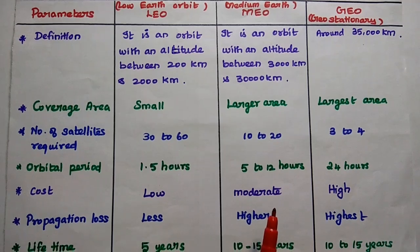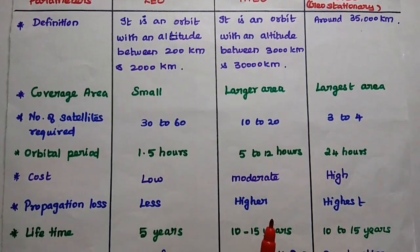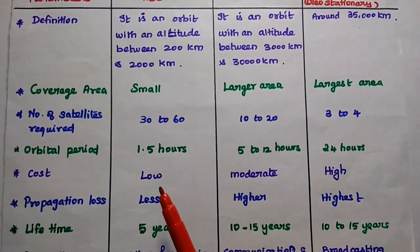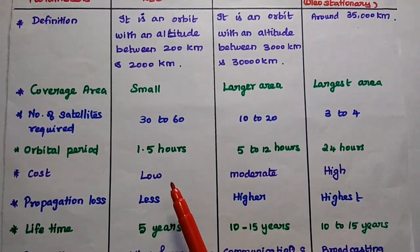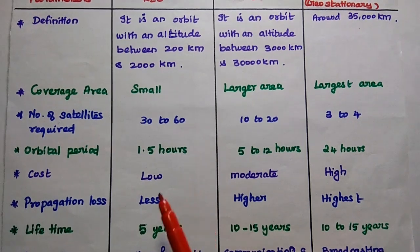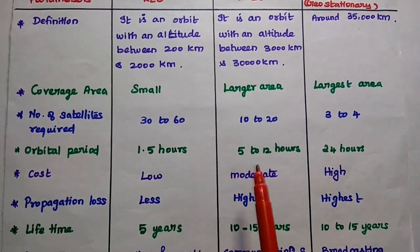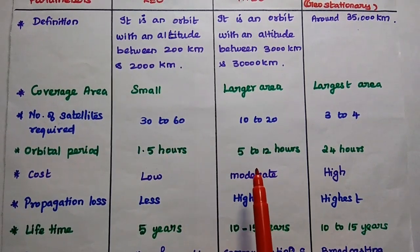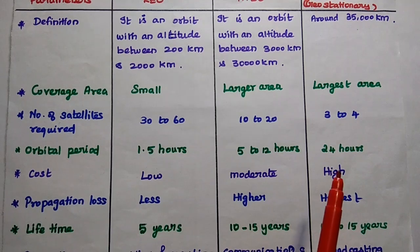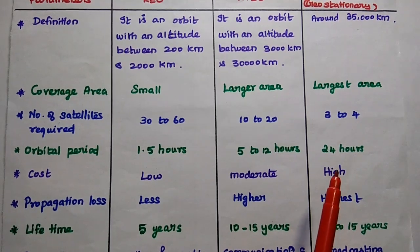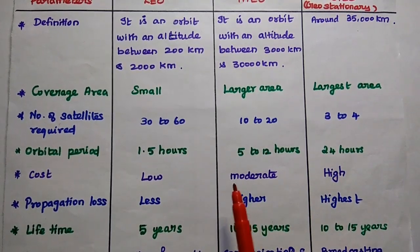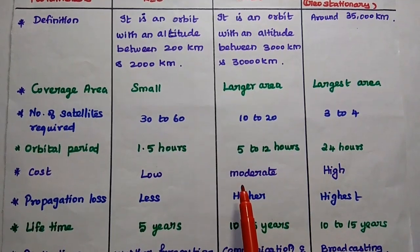The orbital period of a LEO satellite requires 1.5 hours. For MEO, it is 5 to 12 hours. For GEO, it is only 24 hours to cover the entire globe.